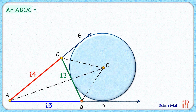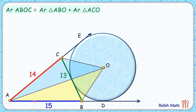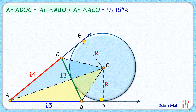The area of quadrilateral ABOC equals the sum of the area of triangle ABO and the area of triangle ACO. For the yellow triangle, AB is the base and OD is the height, which is capital R, so its area is half of 15 times R. For the blue triangle, AC is the base and OE is the height, also R, so its area is half of 14 times R. Their sum gives the area of the quadrilateral as 29/2 times R.